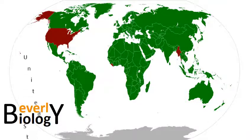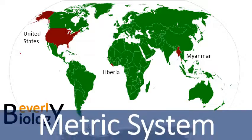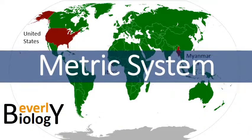What does the United States, Liberia, and Myanmar have in common? Well, these are really the only three nations that have yet to fully embrace the metric system. Here in the United States there are certain areas within our government and society that have gone metric, but in everyday life we still kind of hold on to the English measuring system or the Imperial measuring system.